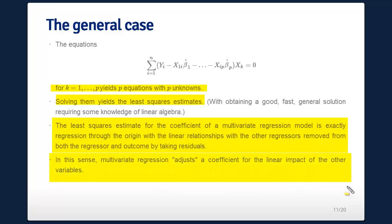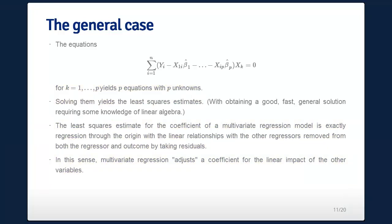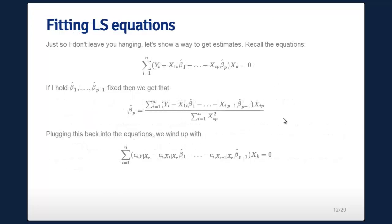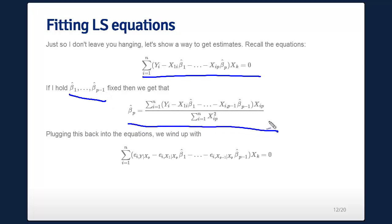Multivariate regression adjusts a coefficient for the linear impact of all the other variables — we've removed the other variables from both the regressor and the response. There's a special case if there is no relationship between a regressor and the confounder we're trying to remove. This is a detail you won't be quizzed on, but: imagine if you held the first p−1 β̂'s fixed, then you could solve for the p-th one and get that estimate.